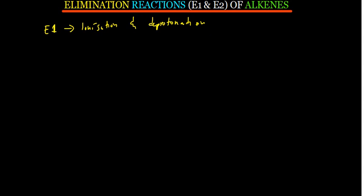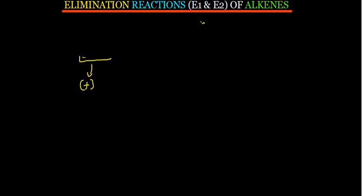In ionization, the carbon-to-halogen bond breaks to give a carbocation intermediate — something that is positively charged. Then in deprotonation, we remove the proton. That is deprotonation. We'll see how this process happens.